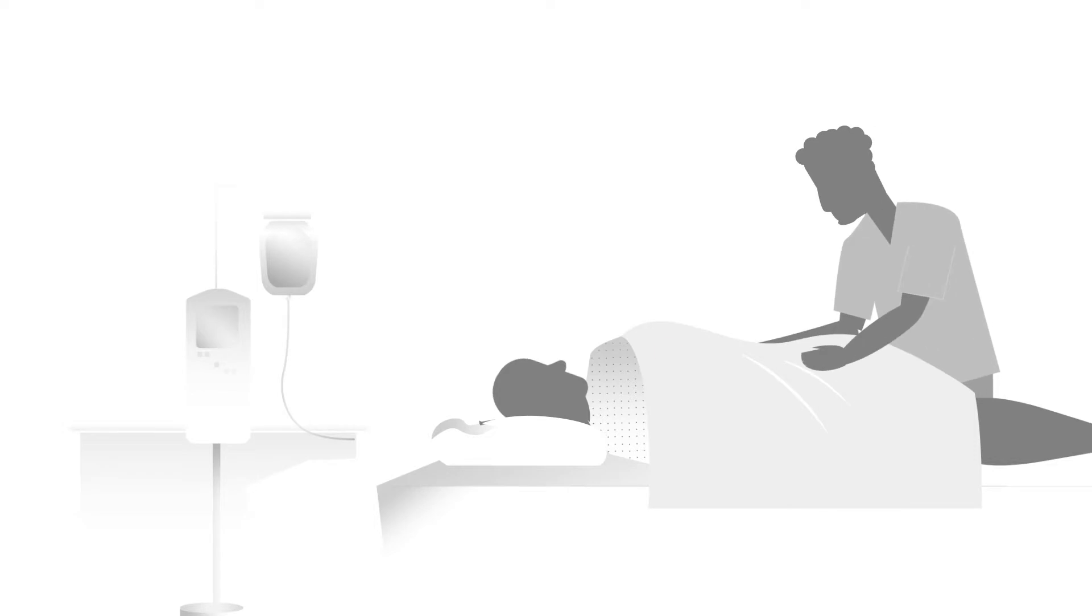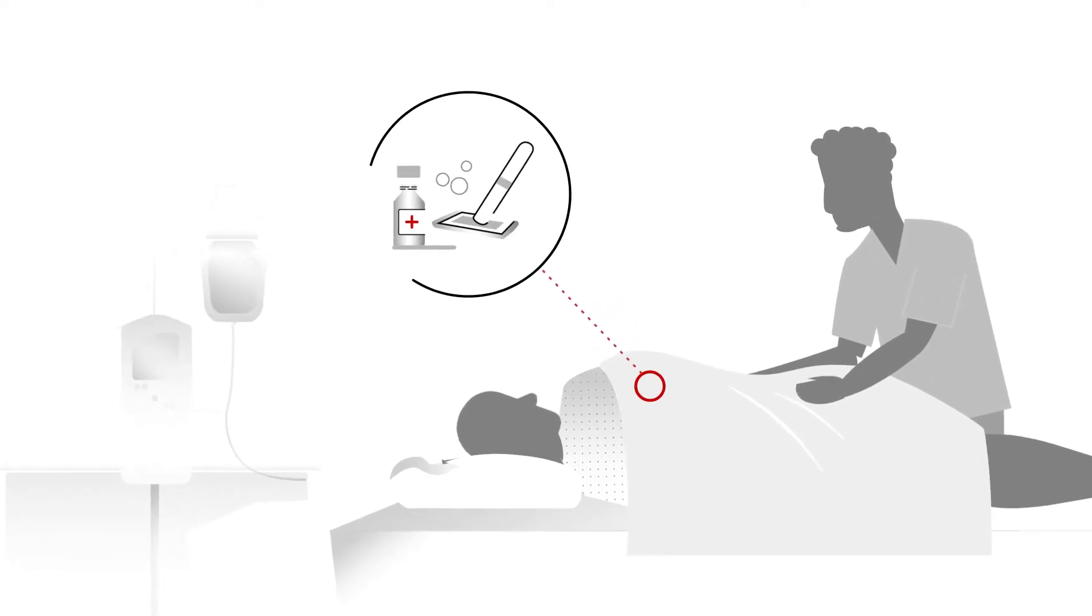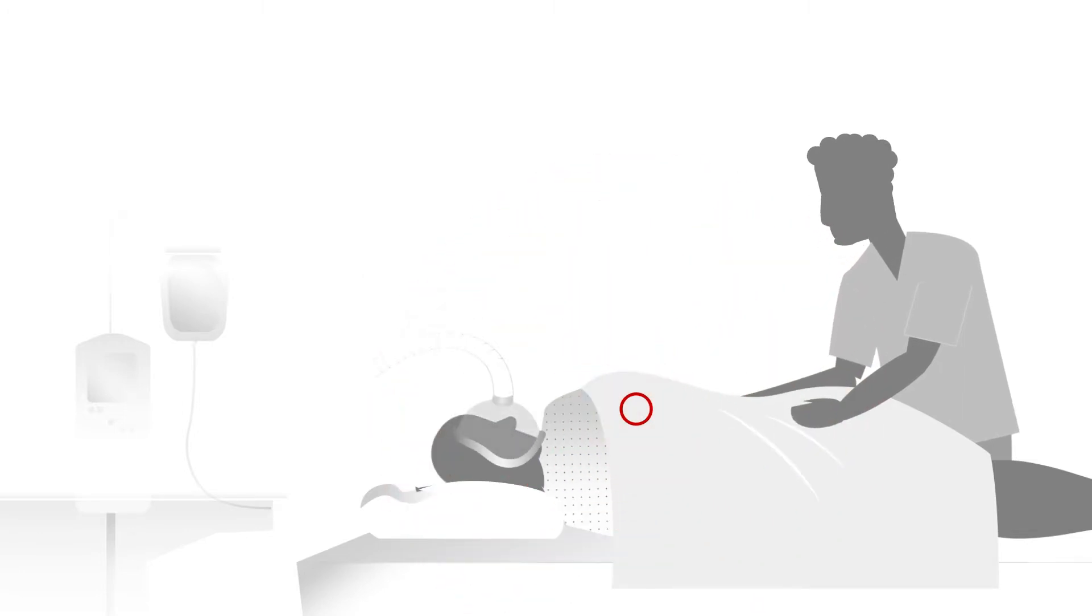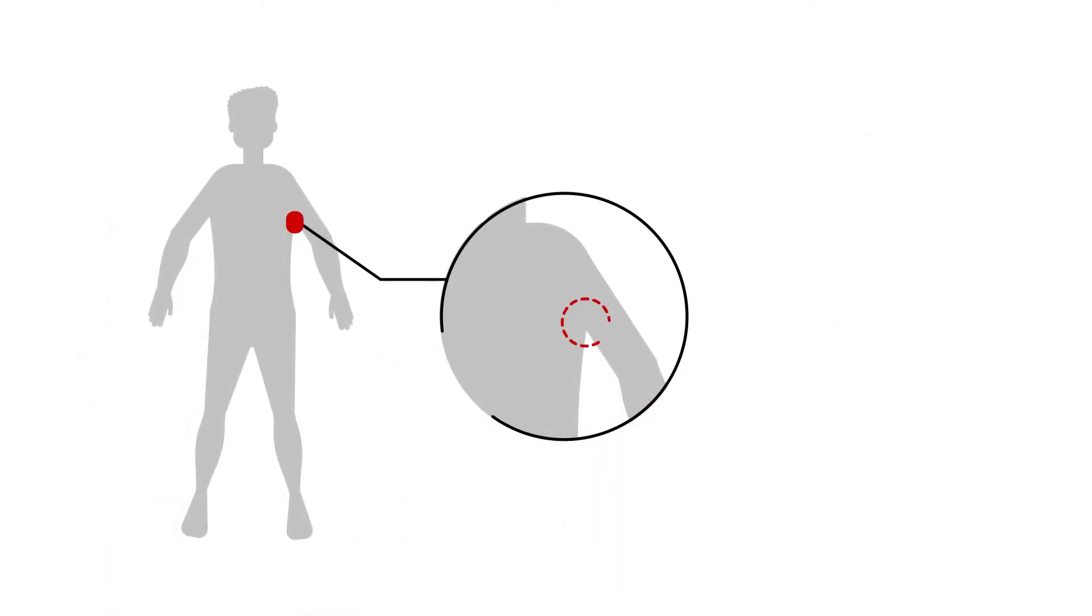You'll lie on an examination table, and the skin over the site will be cleaned. You will likely be injected with a local anesthetic, though they may put you to sleep with a general anesthetic. The surgeon will make a small incision, remove all or part of the lymph node, and then close up the wound with stitches.